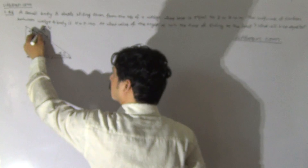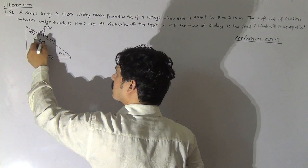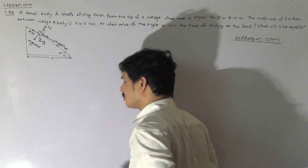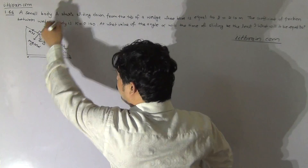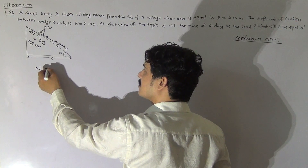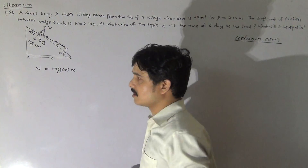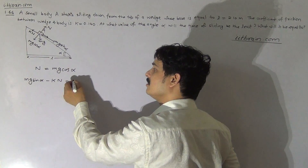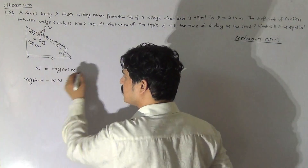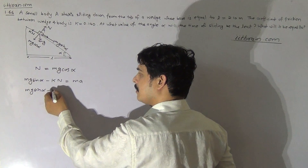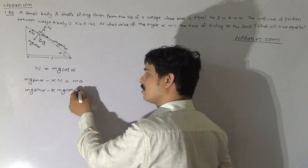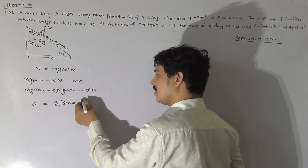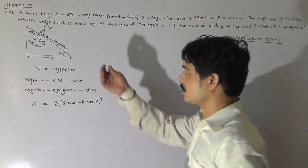As we saw in previous problems, the components of Mg will be Mg cos alpha perpendicular to the incline, and Mg sin alpha is the force responsible for the downward motion of the block. For balancing perpendicular to the incline, normal reaction N equals Mg cos alpha. For the downward journey: Mg sin alpha minus KN equals MA, and since N equals Mg cos alpha, the acceleration becomes A equals G(sin alpha minus K cos alpha).